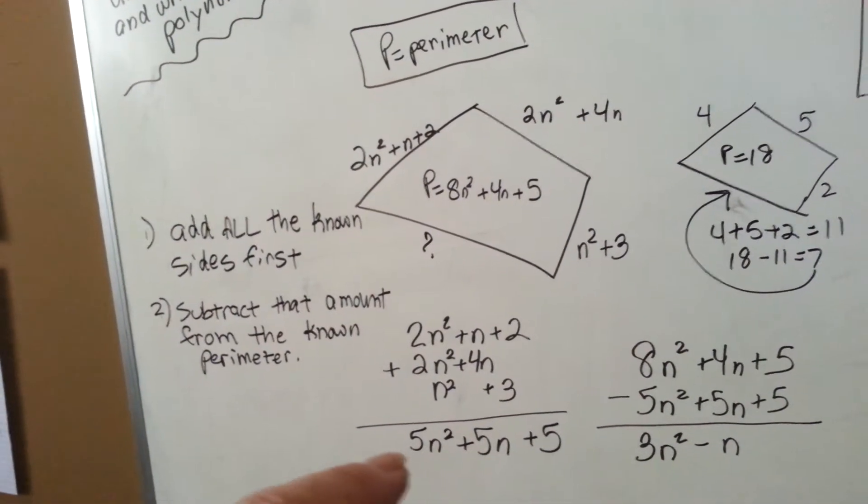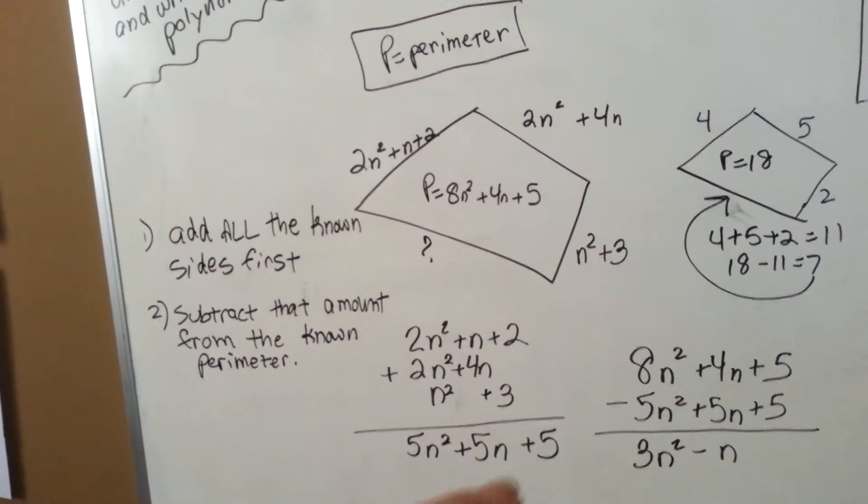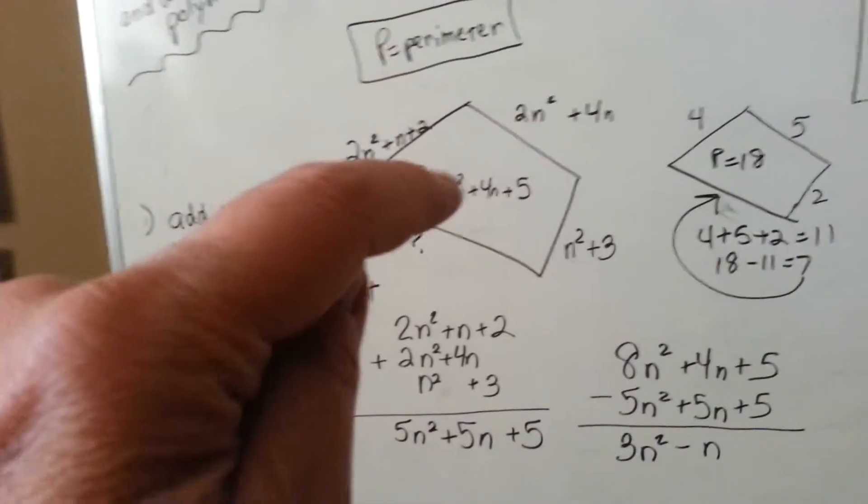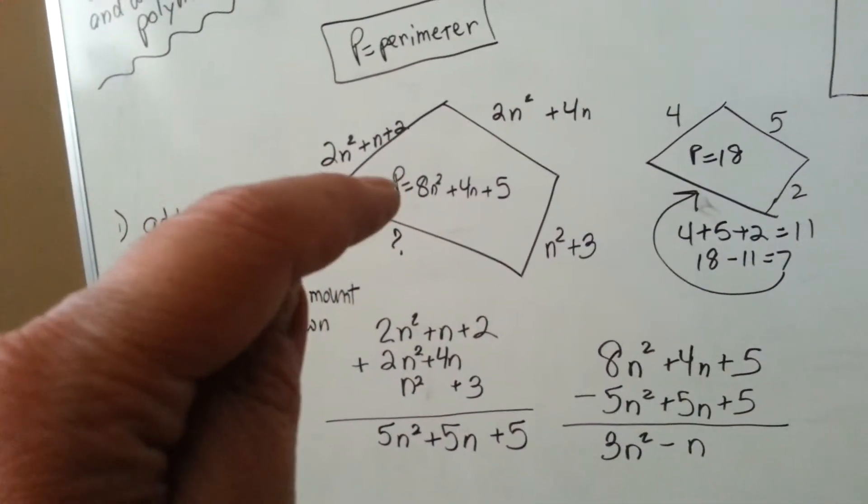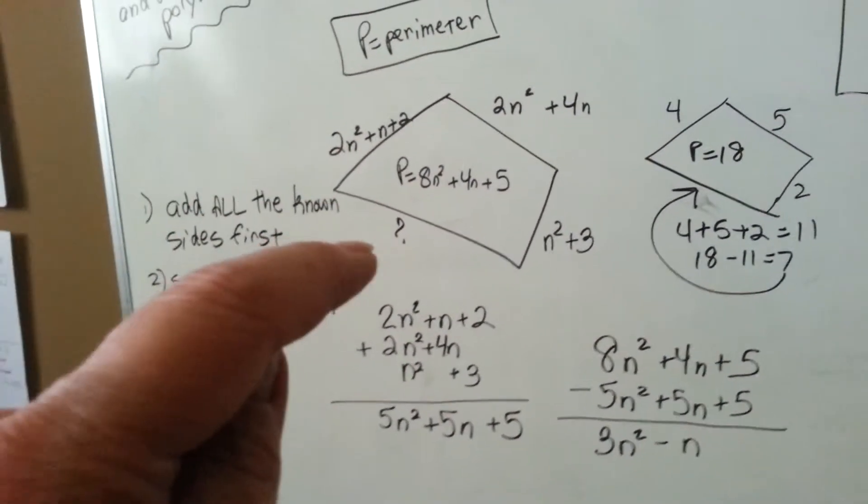So we get 5n squared plus 5n plus 5. That is what we've got to take away from this perimeter right here, and that will give us the answer to that.